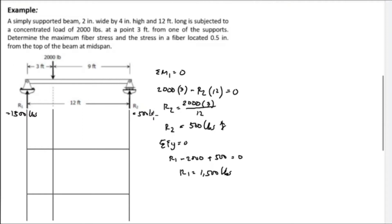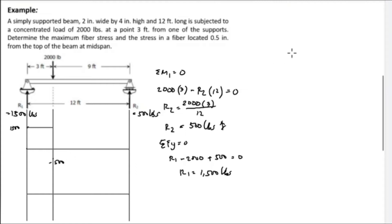Starting the shear diagram: at point 1 there is an upward reaction of 1,500 pounds, so the shear starts at positive 1,500. From point 1 up to the concentrated load there is no distributed load, so the shear is a horizontal line remaining at 1,500 pounds.